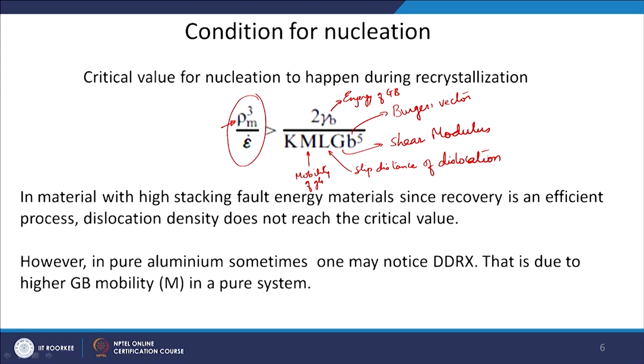In very pure aluminum, the mobility of the grain boundary is very high because there are no solute atoms or precipitates to pin the grain boundary, so the grain boundary can move very easily — the mobility term M is very high. Since M is in the denominator of the nucleation criterion ratio, the value of this ratio will be lower, meaning you require less dislocation density to start the nucleation process. So either lower recovery efficiency leading to high dislocation density, or higher grain boundary mobility making the critical ratio easier to reach, can cause recrystallization even in high stacking fault energy materials. These are very specific cases.